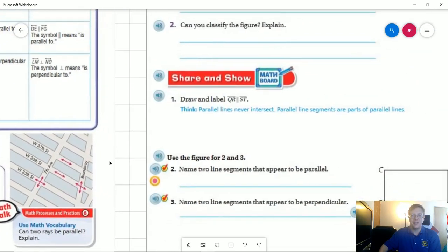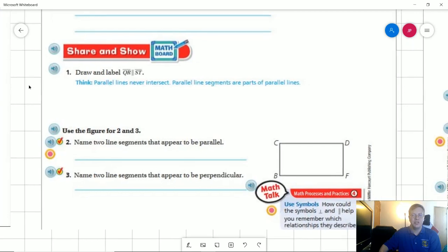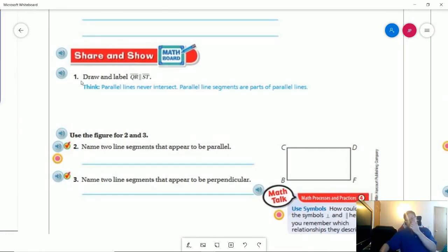I'm going to skip this top part here. We're going to end up doing plenty of drawing during this lesson. So the first part for share and show they want us to draw line segments. Our line segments are going to begin and end at a point so you can go ahead and draw those in. I'm going to kind of make a rectangle here and then I'm just going to connect the dots top to bottom. This could be my QR, this could be my ST or either way.